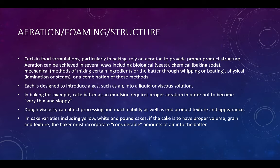The chemistry of egg protein coagulation explains how egg products assist with binding ingredients in multi-component prepared food systems, preventing the product from crumbling, losing its shape, or falling apart. Aeration, foaming, or structure: certain food formulations, particularly in baking, rely on aeration to provide proper product structure. Aeration can be achieved through biological catalysts like yeast, chemical means like baking soda, or mechanical methods such as whipping or beating.